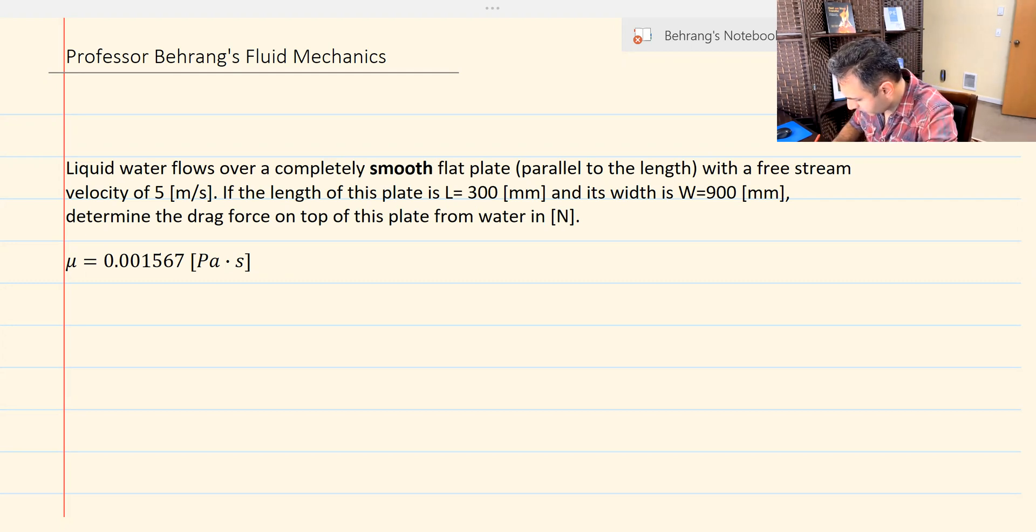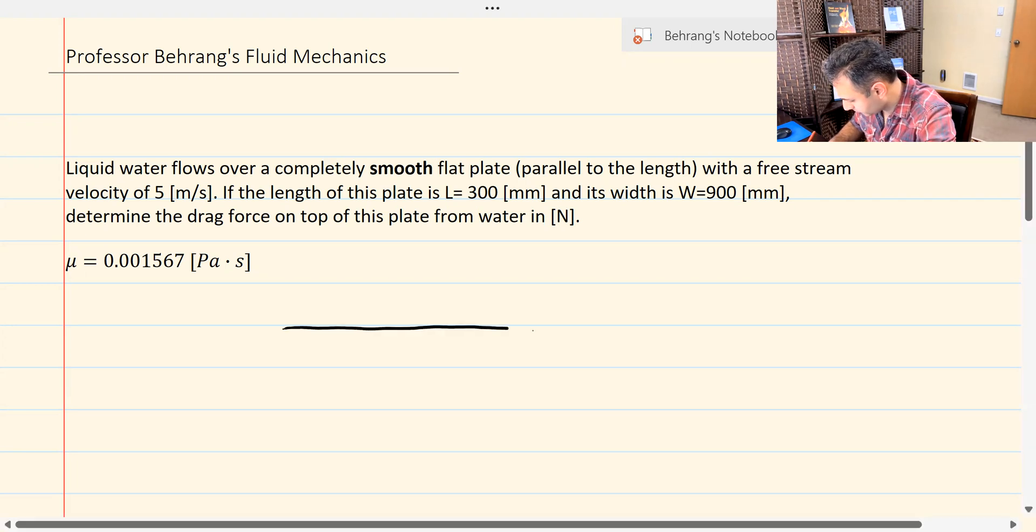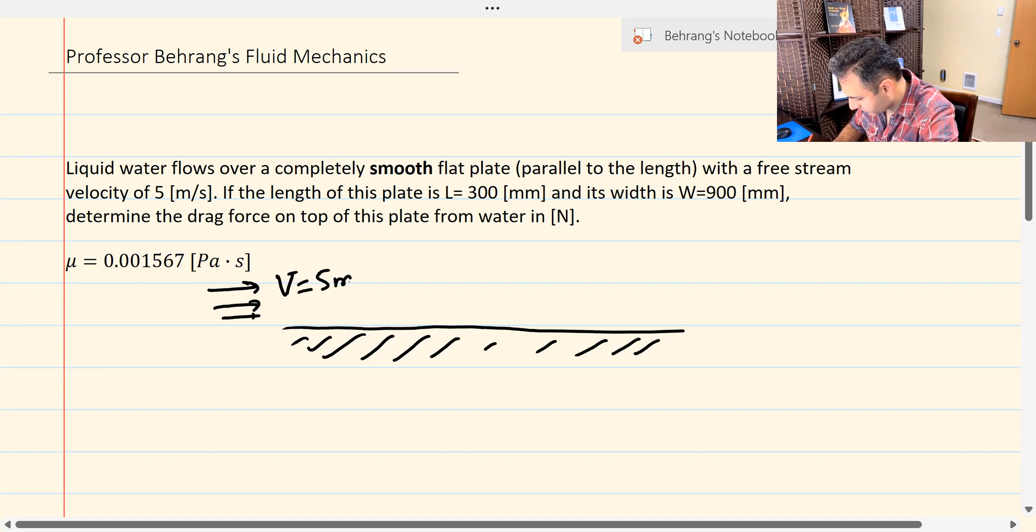All right, so here's a flat plate. This is not a complicated problem. Here's a flat plate like this. V infinity is given. Velocity is given as five meters per second. The viscosity is given. It says it's a smooth flat plate. The fluid is liquid water. So we're going to use the density of 1,000 kilograms per meters cubed.